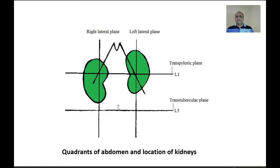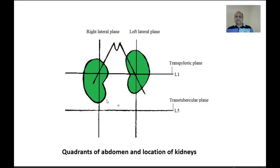The umbilicus lies at the level of the disc between L3 and L4 vertebra. The kidneys extend from T12 to L3 vertebra, and the right kidney is slightly lower compared to the left. The transpyloric plane passes such that one kidney is lower and the other is higher. You have to remember that the kidneys are retroperitoneal organs occupying different quadrants of the abdomen.